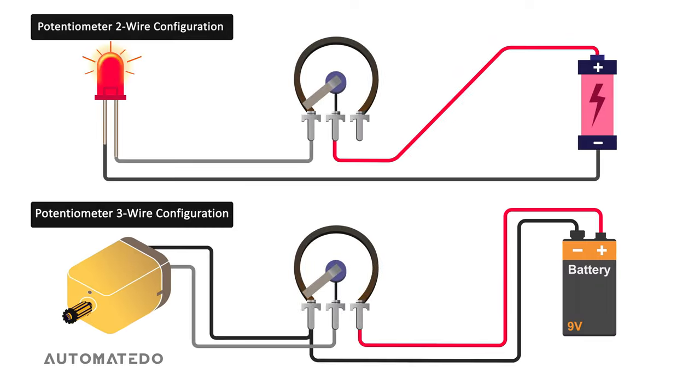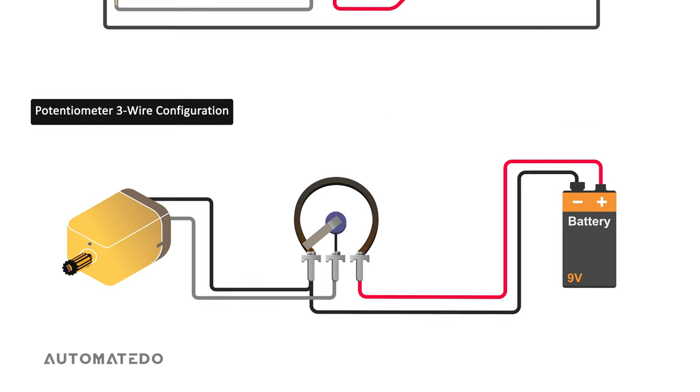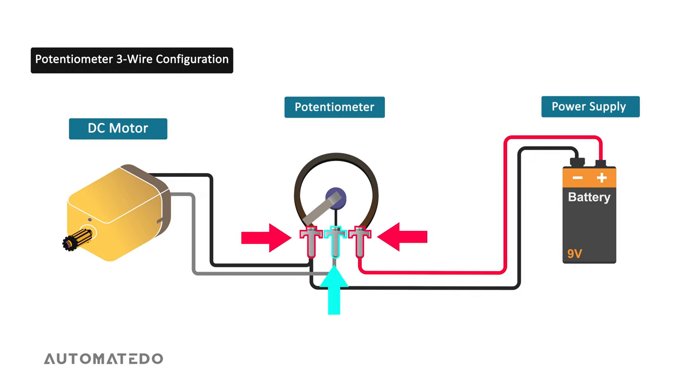Now, let's switch to another application example where all three terminals of the potentiometer are being used in wiring configuration. This way, we can say the potentiometer will act as a voltage divider.